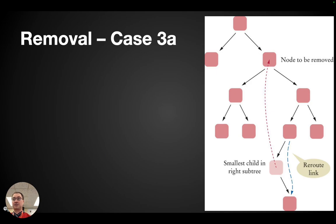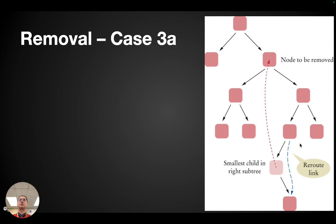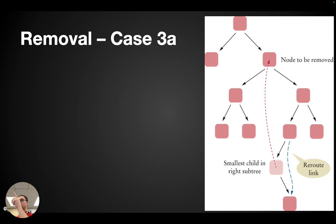To help cement this, I have a question: think about it without talking to your neighbor first for about 30 seconds, then talk with your neighbor. I just showed you how if we find the smallest child in the right subtree and substitute that for the node to be removed, the binary search tree is valid. My question is: this is not the only approach — what is another approach we can take to handle this situation?